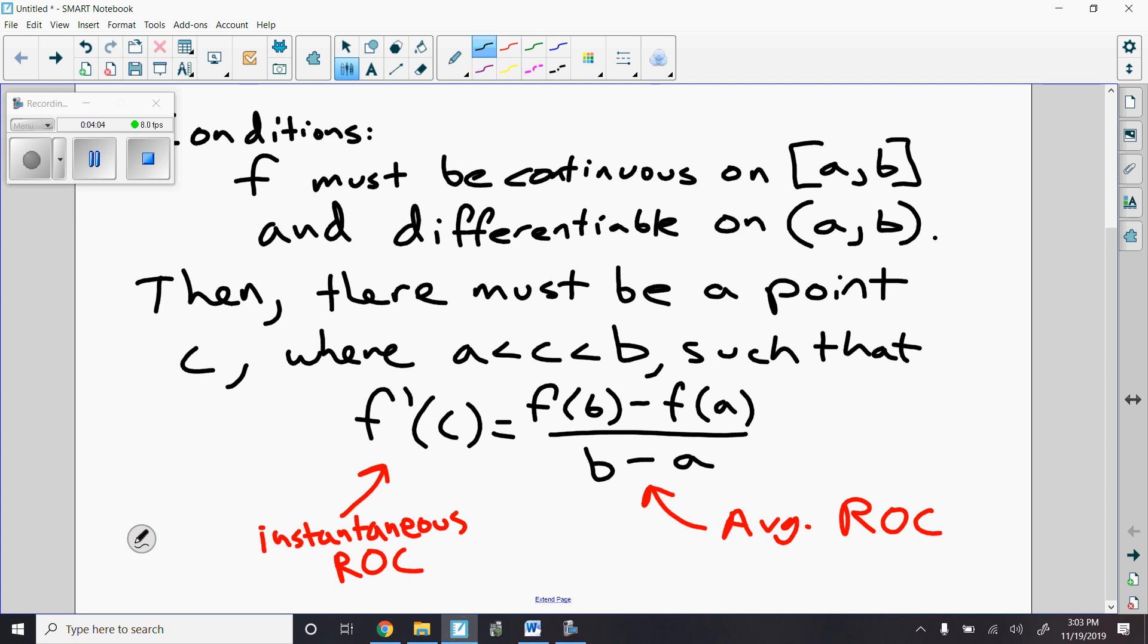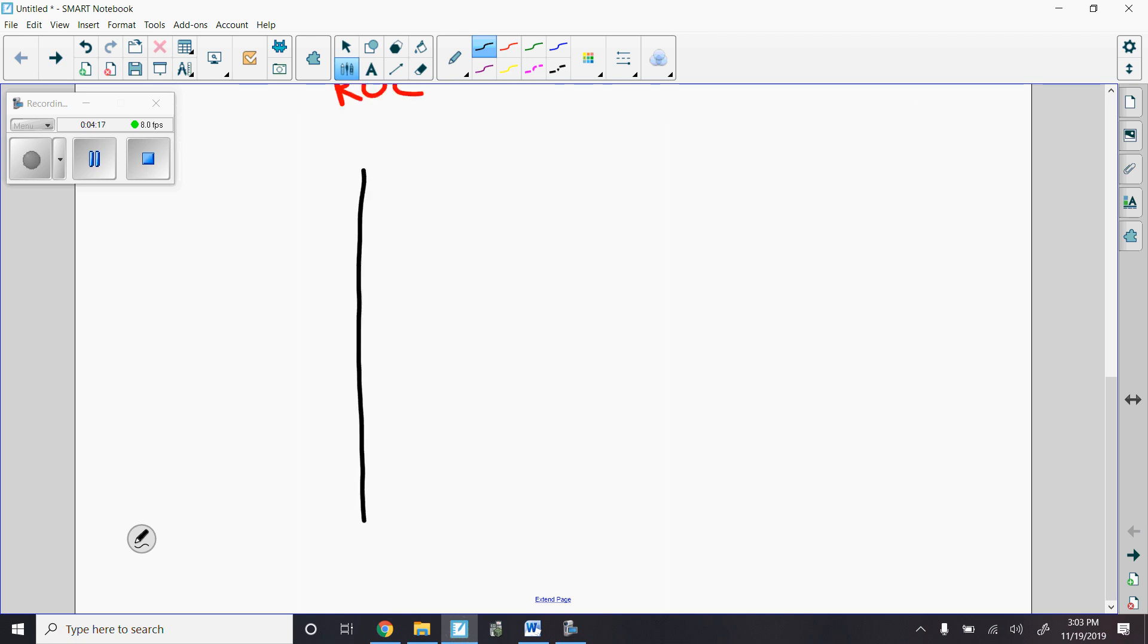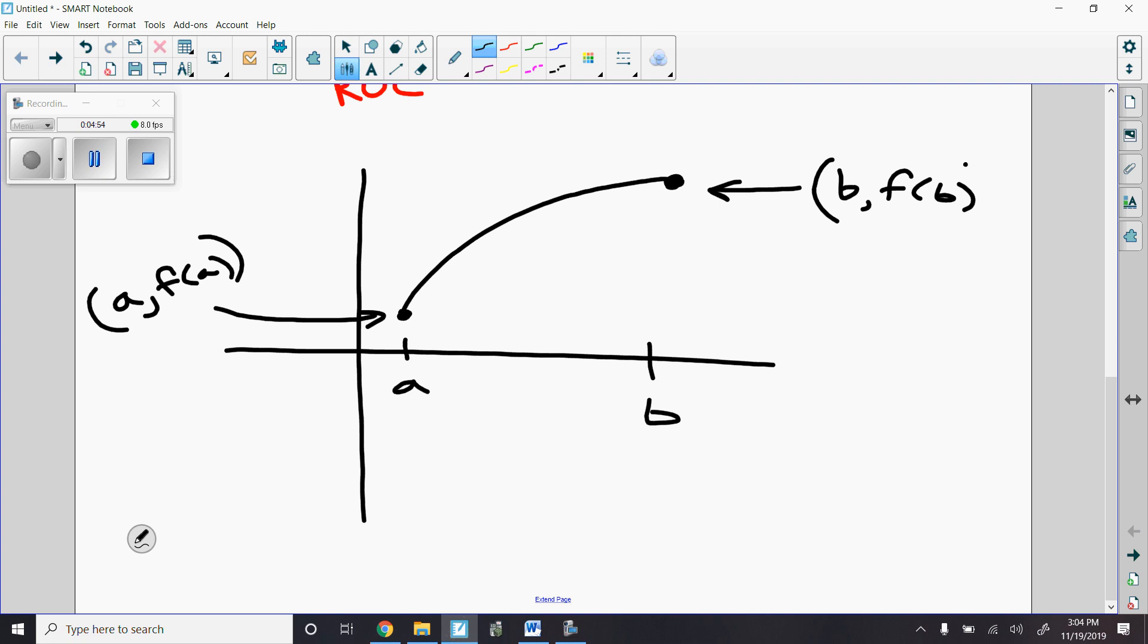Okay, I think the mean value theorem could be best understood by looking at a visual representation of it. So take a look at this graph. I need to sketch a graph that's continuous on the closed interval and differentiable on the open interval. So this is the point A comma F of A. F of A is like a Y value, F of B is like a Y value. They're the corresponding Y values for X value A and X value B.